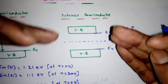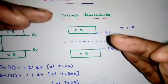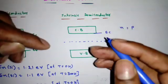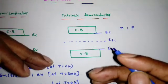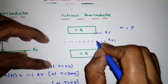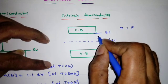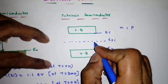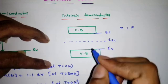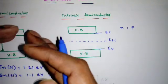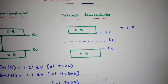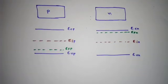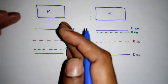If temperature increases or doping is added, the electron-hole concentrations change. If electrons increase, the Fermi level moves closer to the conduction band. If holes increase, the Fermi level moves closer to the valence band. This is what happens in n-type and p-type semiconductors respectively.